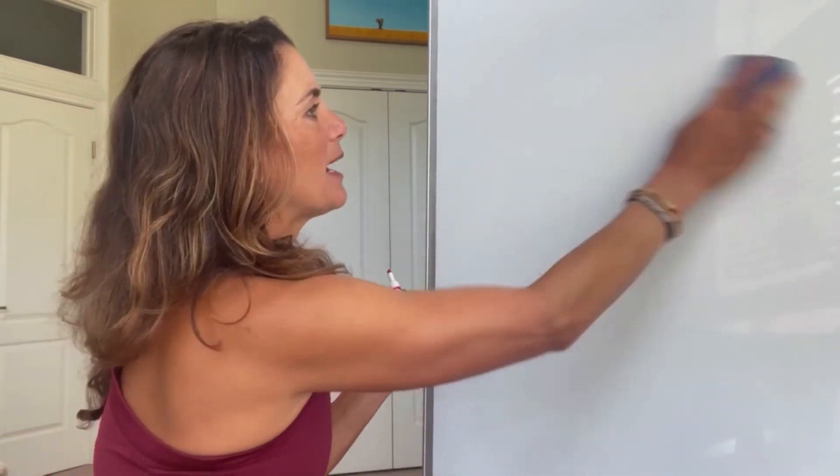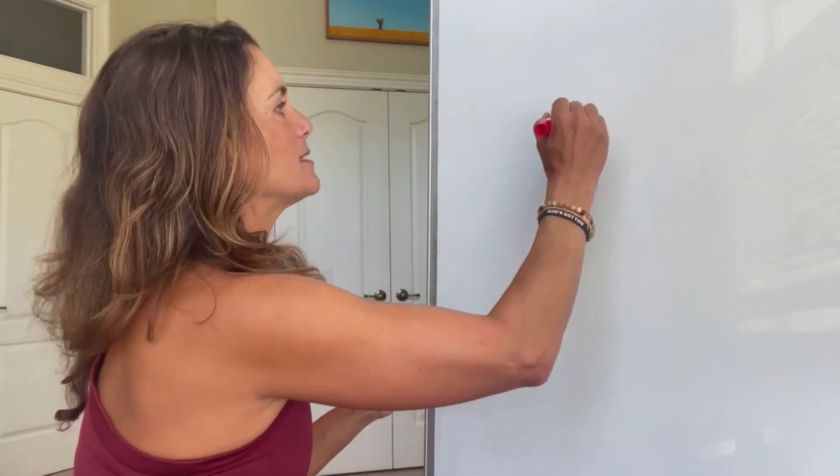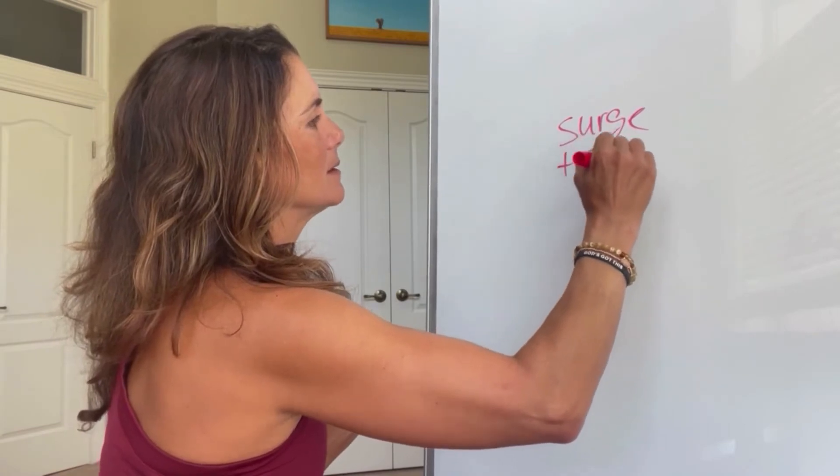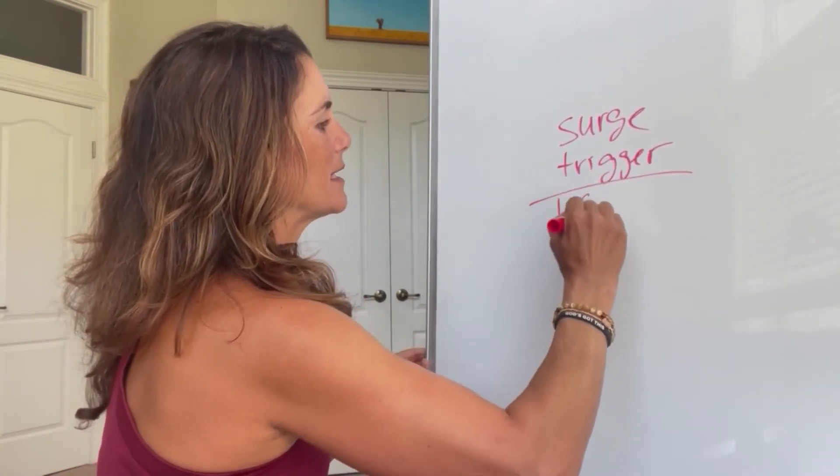Once you have a dominant follicle and your lead follicles appear mature, we give you a medication to complete the maturation process — this medication would cause you to ovulate in 36 hours. We precisely time this medication and your retrieval so that retrieval happens at about 35 hours, meaning your follicles are as mature as possible but have not ovulated yet and haven't left the ovaries so we can retrieve them. This is called a surge medication or a trigger medication, and the most common is HCG.